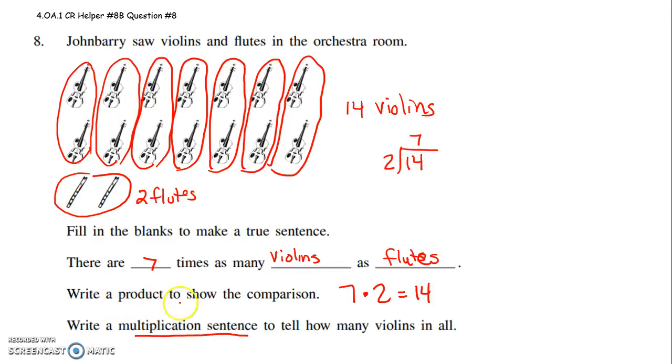Write a product to show the comparison. Product means multiply. Now they want me to write a multiplication sentence to tell how many violins in all. Multiplication sentence would have an equal sign. And again, it would be 7 times 2 gets you to 14.